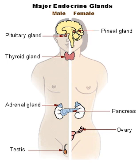Primary endocrine disease inhibits the action of downstream glands. Secondary endocrine disease is indicative of a problem with the pituitary gland. Tertiary endocrine disease is associated with dysfunction of the hypothalamus and its releasing hormones. Endocrine, paracrine, and autocrine signaling have all been implicated in proliferation, one of the required steps of oncogenesis.